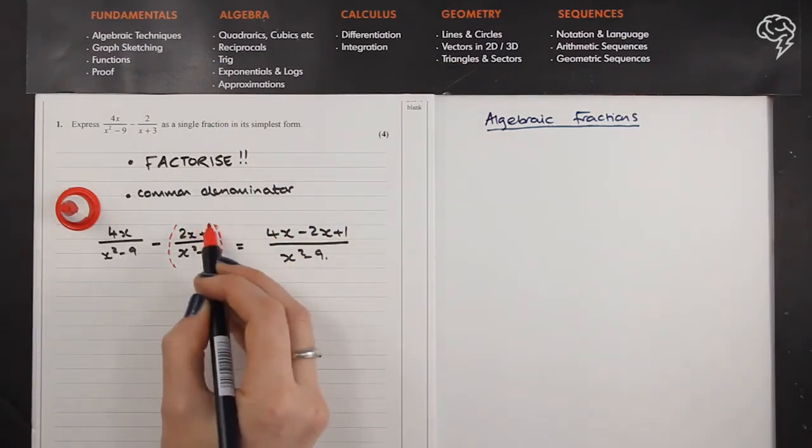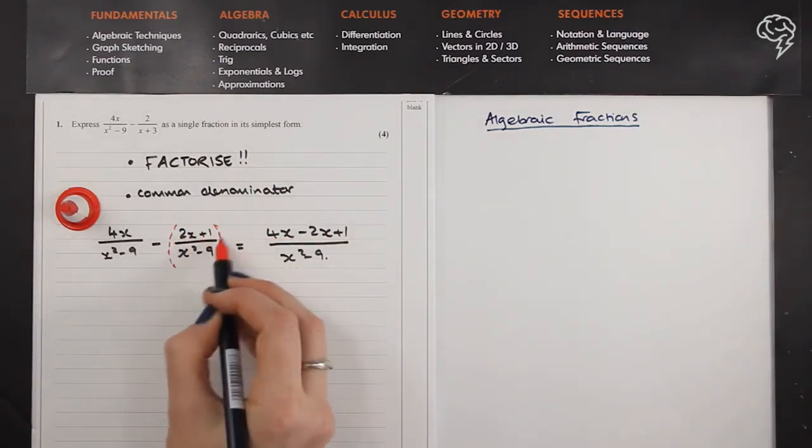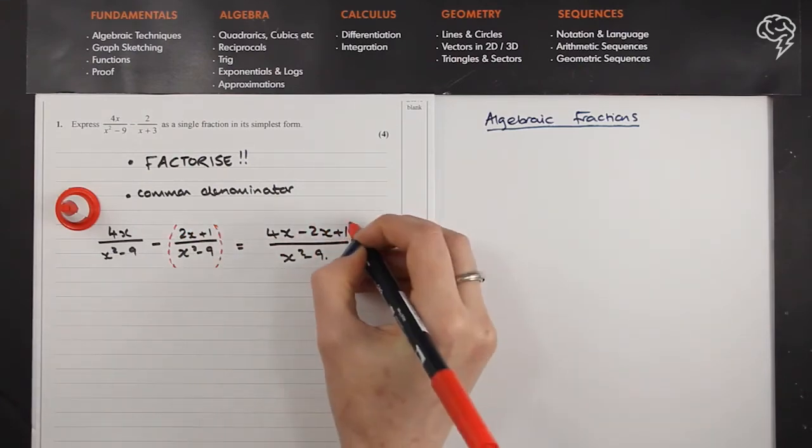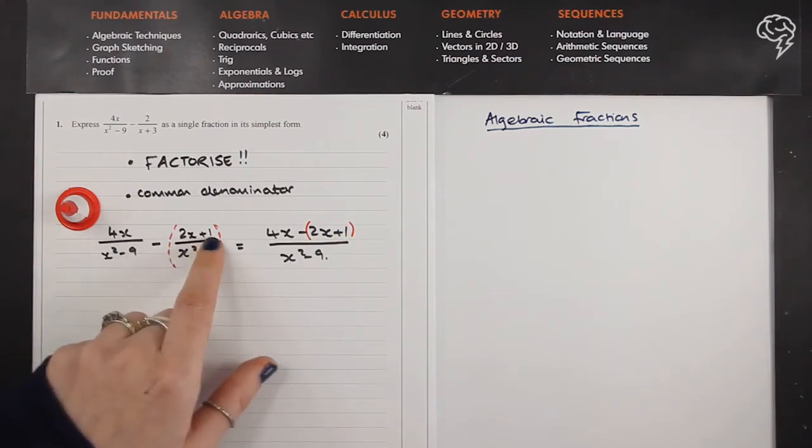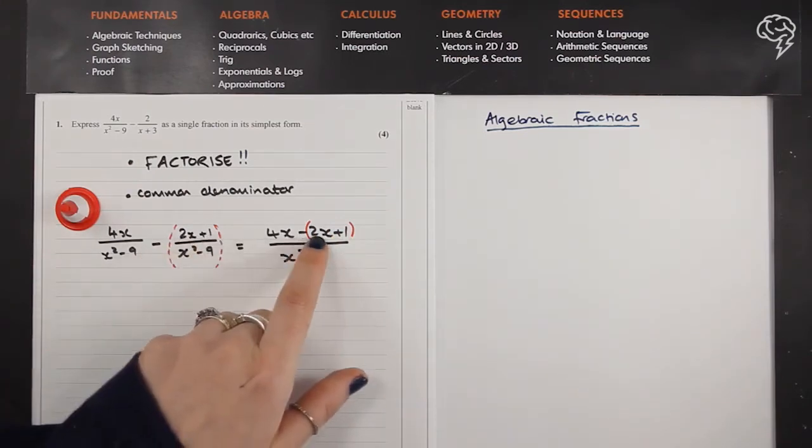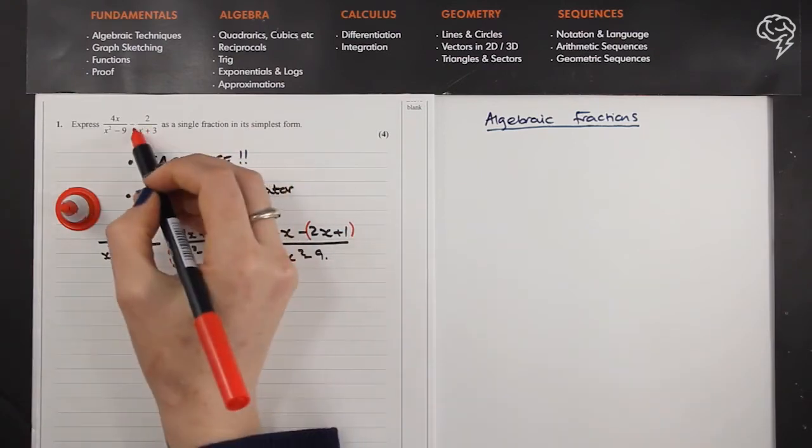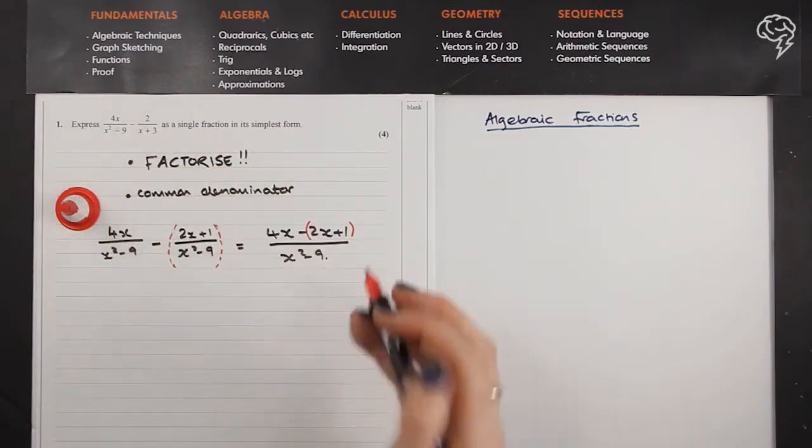But now, because this 2x plus 1 should have really been bracketed here, it absolutely has to be bracketed because we're subtracting 2x plus 1, we're not subtracting 2x and adding 1. So be really careful when you've got a minus in between the two algebraic fractions.